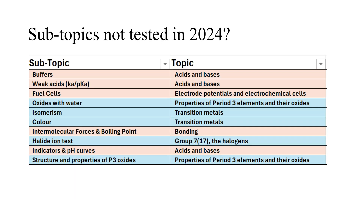Some subtopics were not assessed in 2024, making them slightly more likely to appear in 2025 — though no guarantees. Interestingly, there was nothing to do with buffers in 2024, even though that subtopic still carries the highest average marks, making it quite likely to come up this year and probably worth a large number of marks. Weak acids also didn't come up last year, nor did fuel cells. In inorganic chemistry, period 3 oxides reacting with water, transition metal isomerism, and transition metal color chemistry were not assessed in 2024 — so perhaps slightly more likely in 2025.